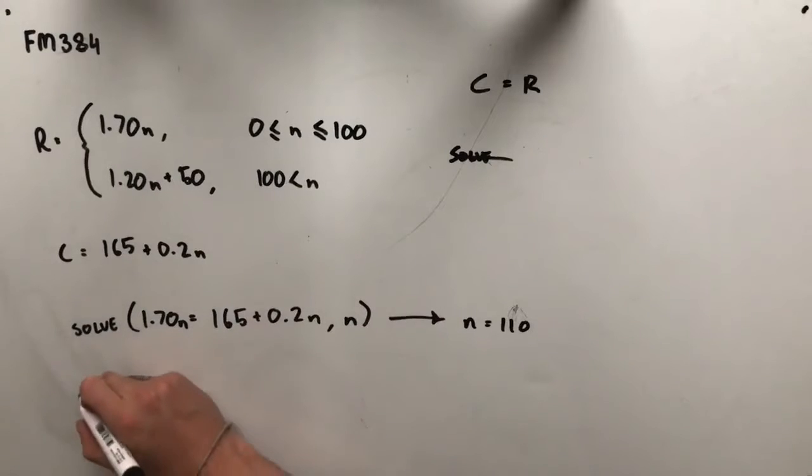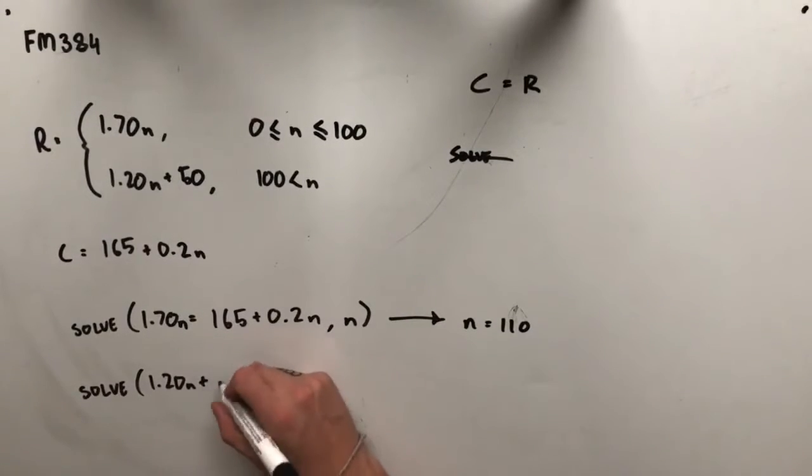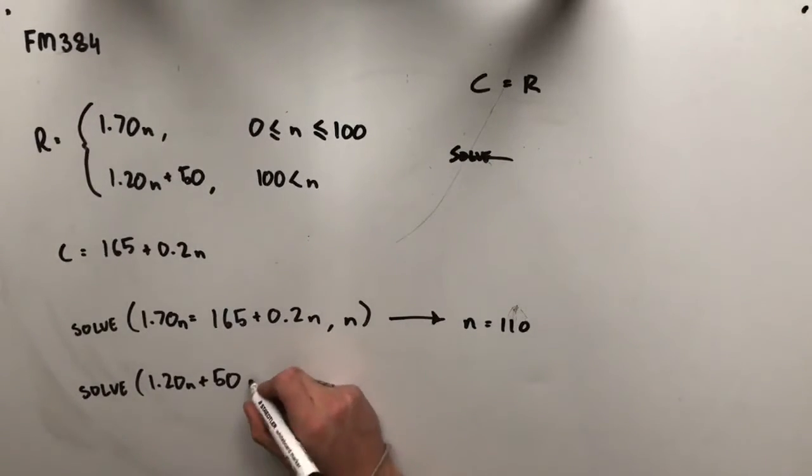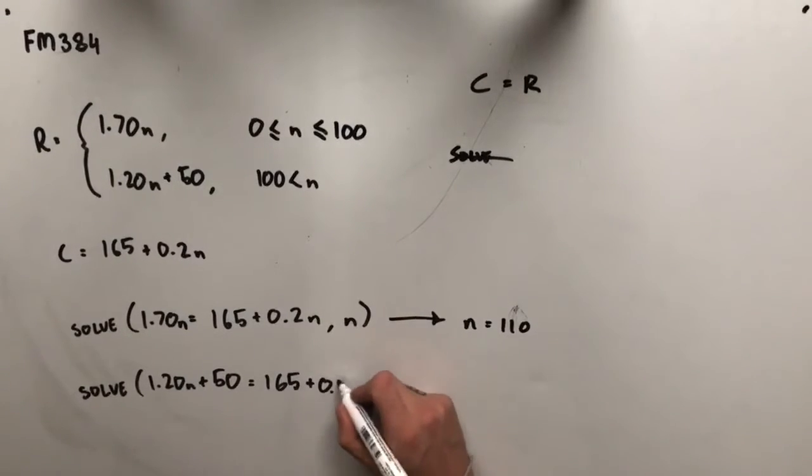So instead, I'm going to try again, and this time we're going to solve the equation with our revenue equal to the second revenue equation. So 1.20N plus 50 is equal to, when is that equal to 165 plus 0.2N? At what value of N?